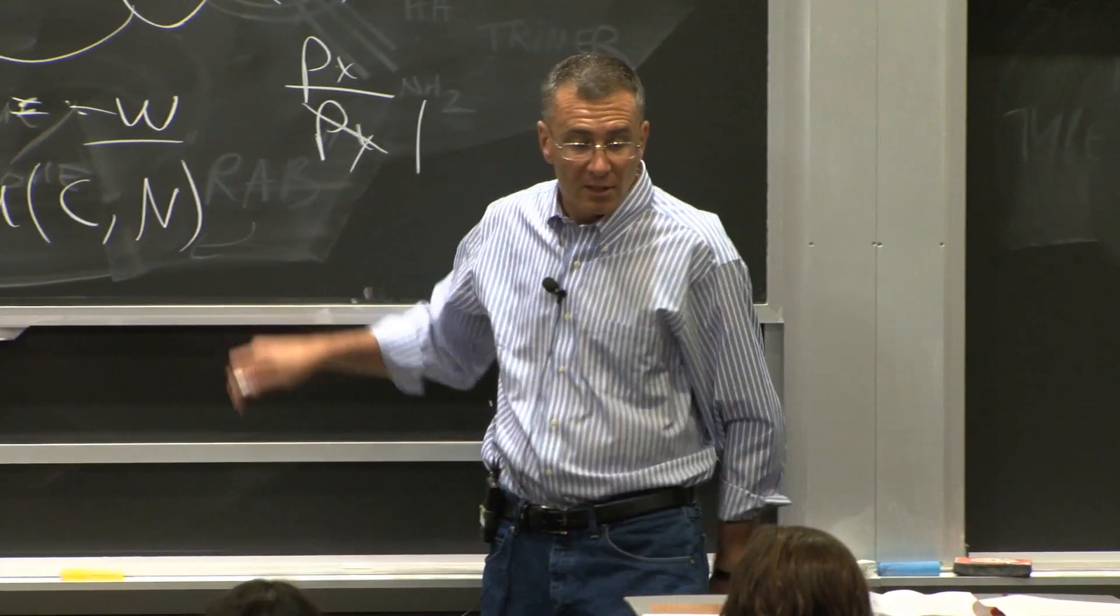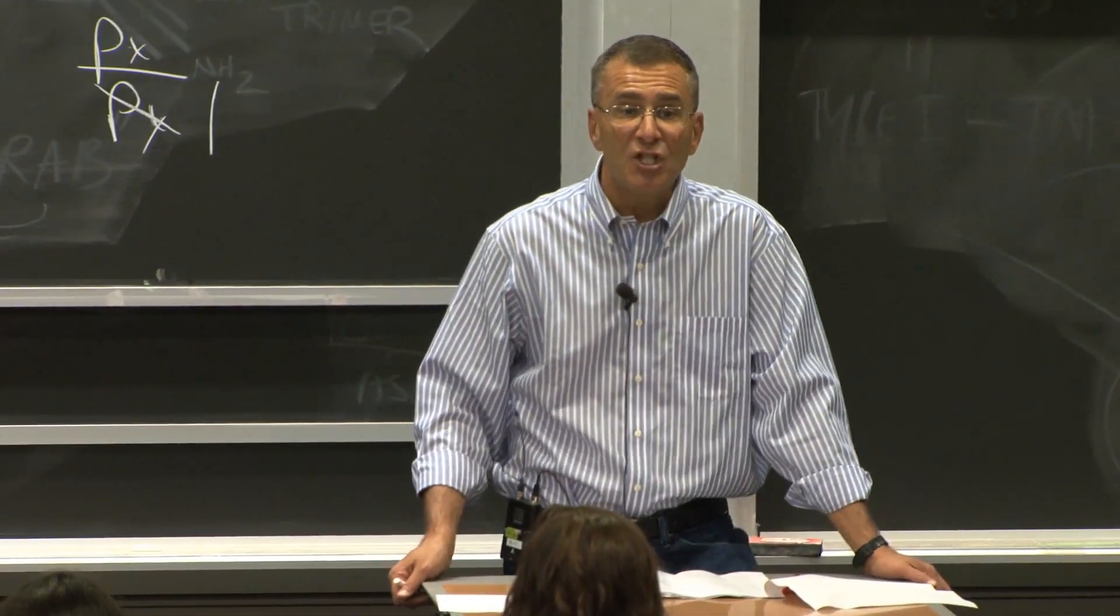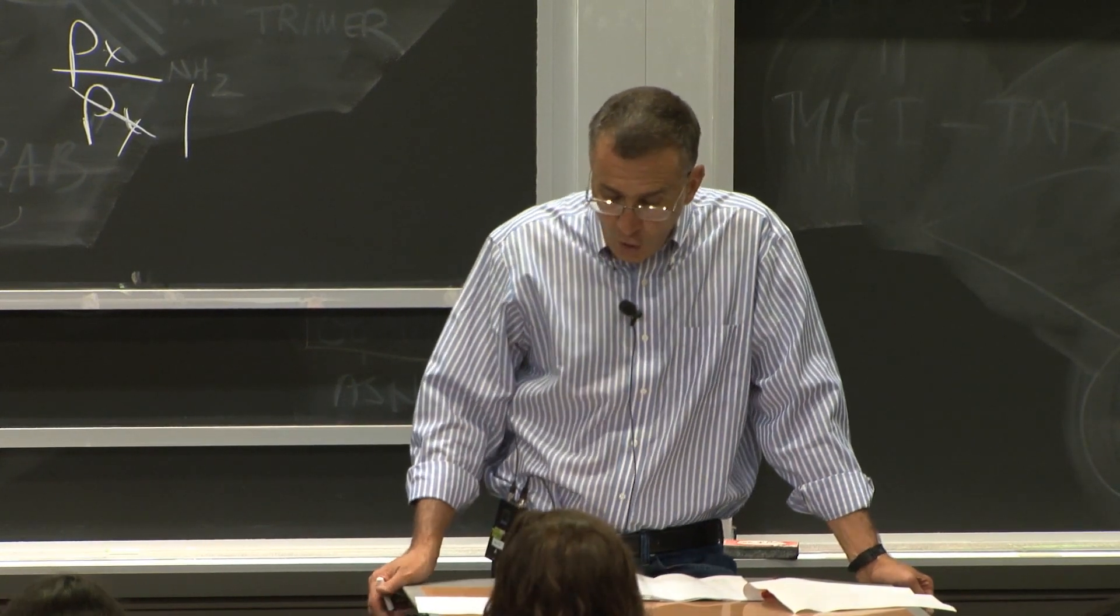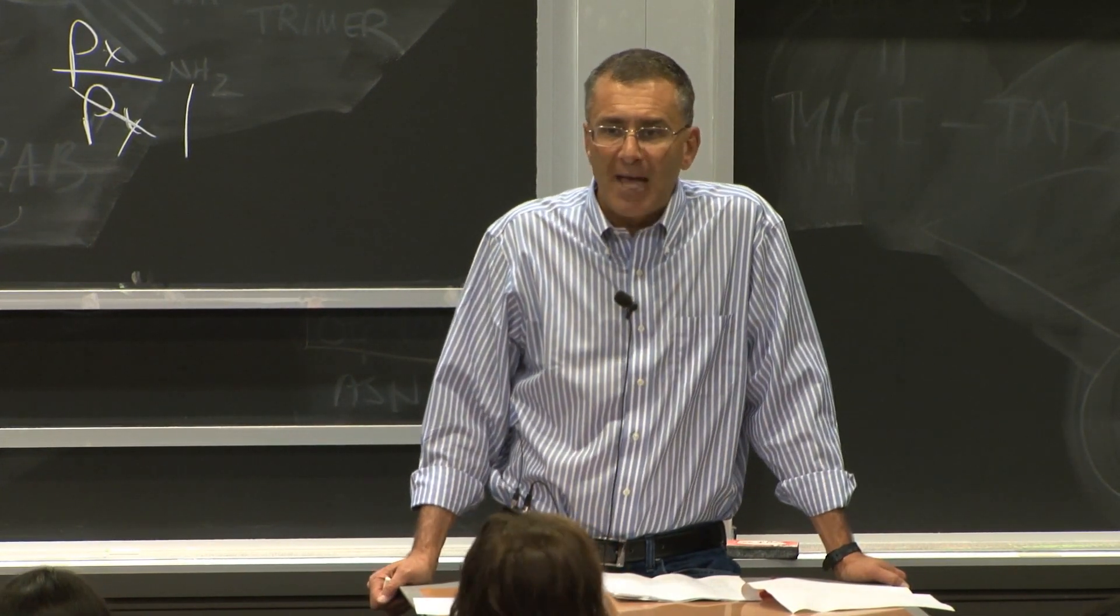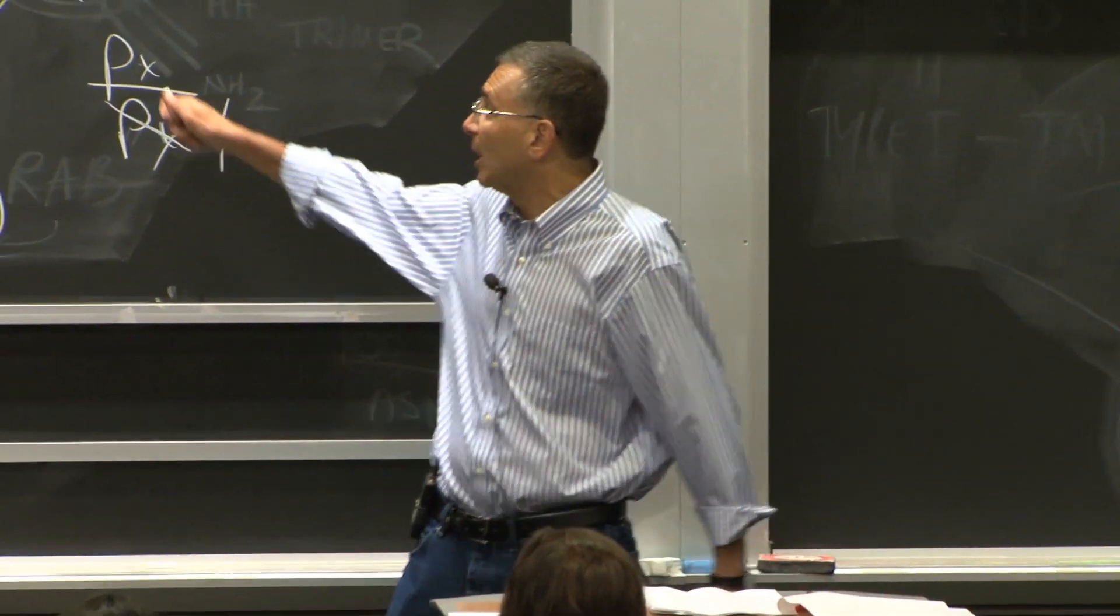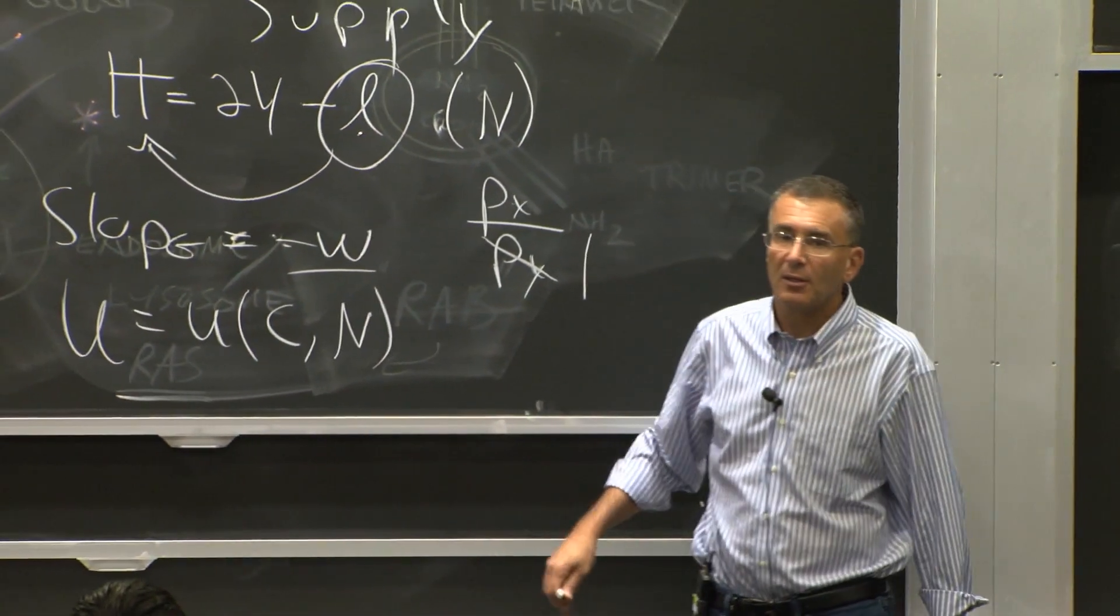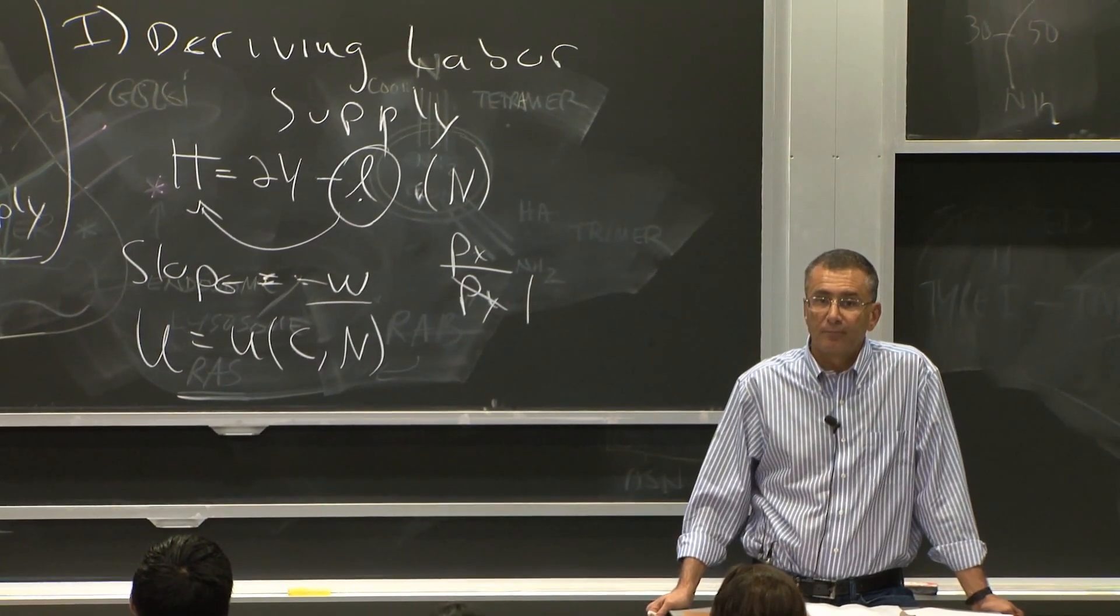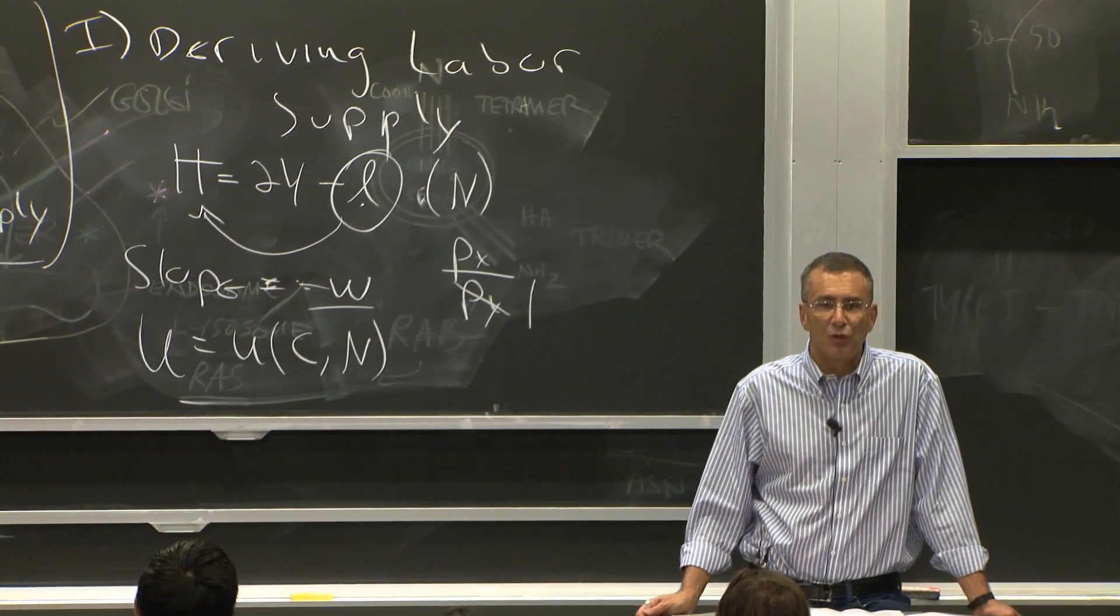We know how to solve for that. We know that the optimum is the tangency between the indifference curve and the budget constraint. So we can solve for the optimal amount of leisure. And having solved for that, we can use this formula, technical formula, to go back and solve for the optimal amount of labor. And that's how we figure out how hard you're going to work.